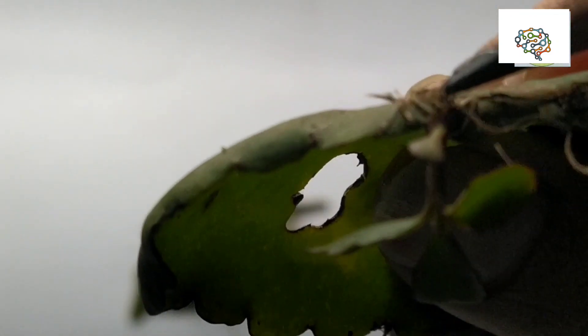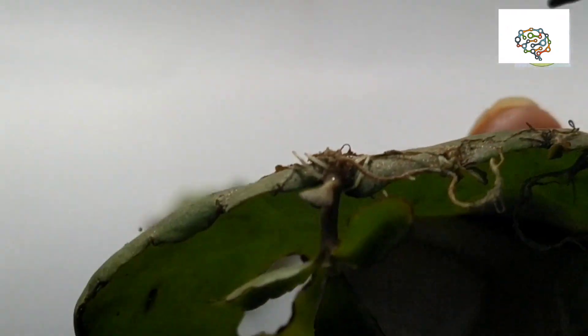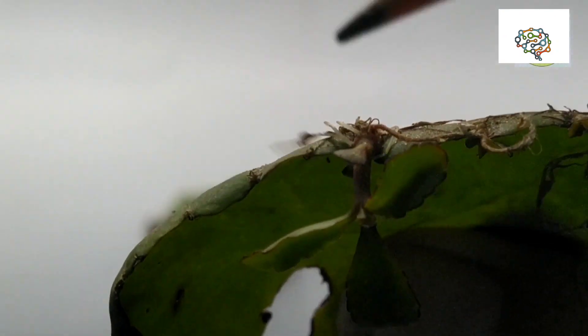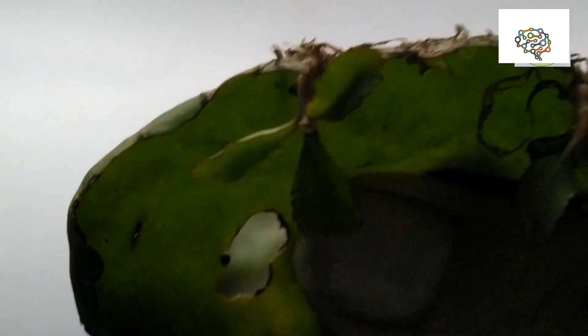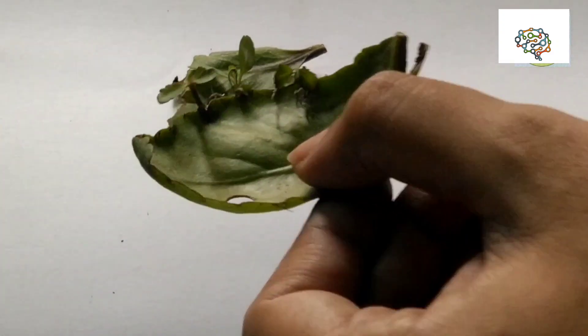These tiny plantlets, after developing stem and roots, they fall off and grow into an independent plant. So in this way Bryophyllum reproduces by its leaves.